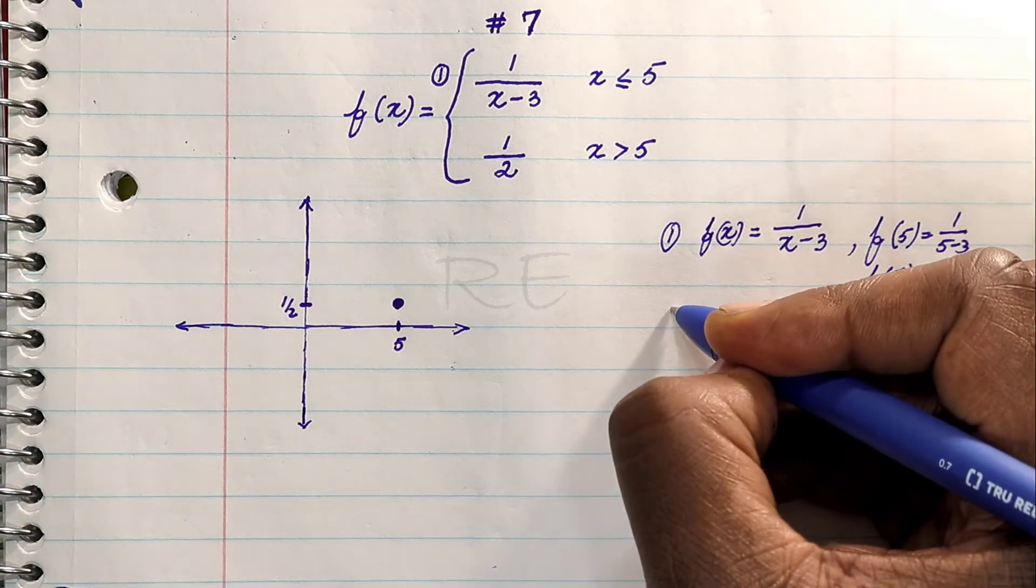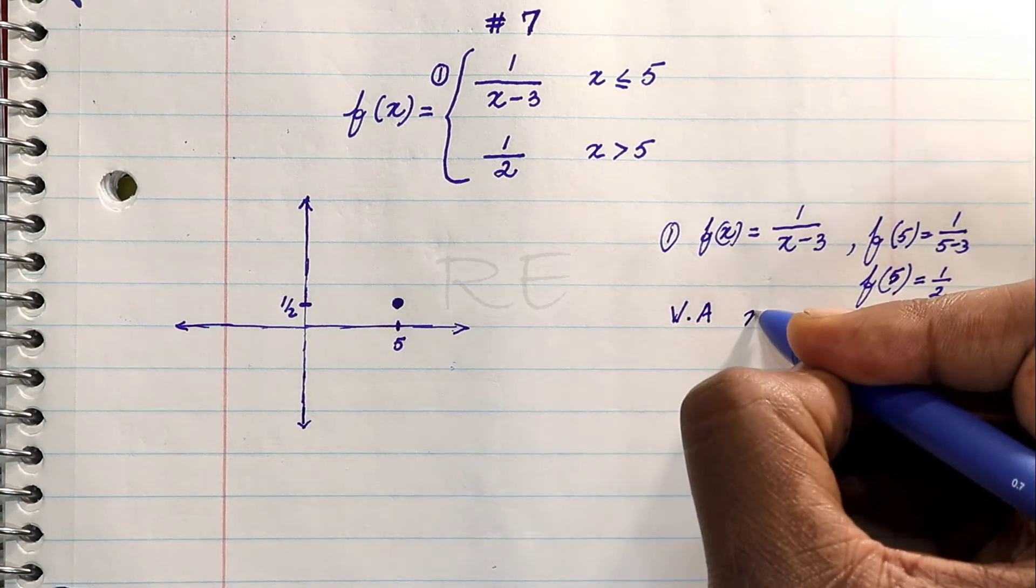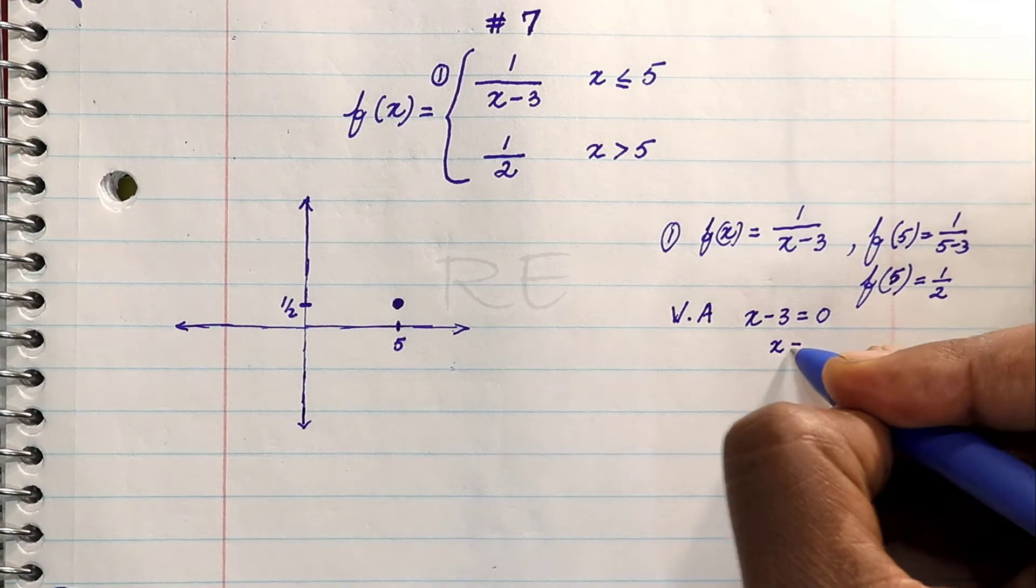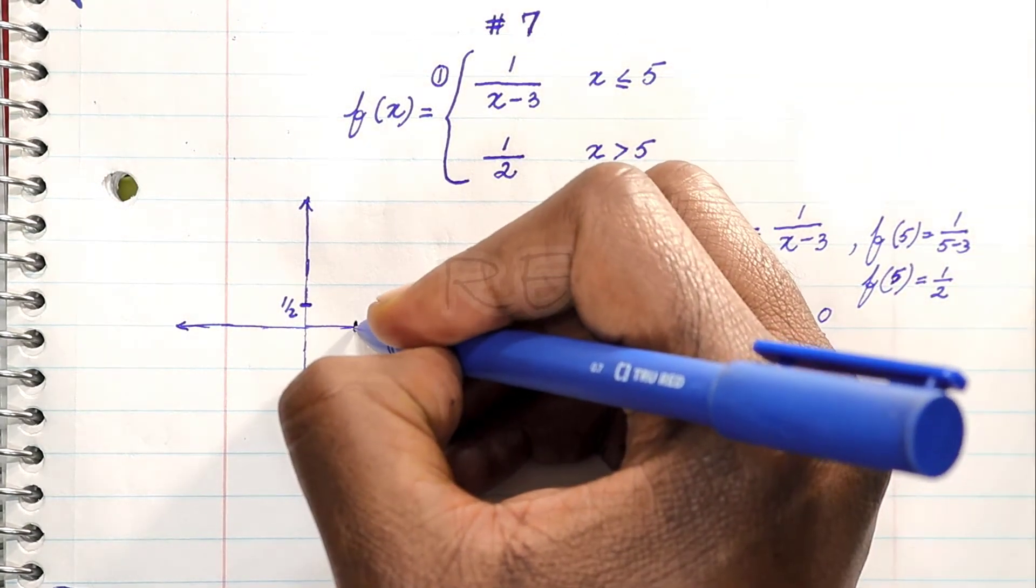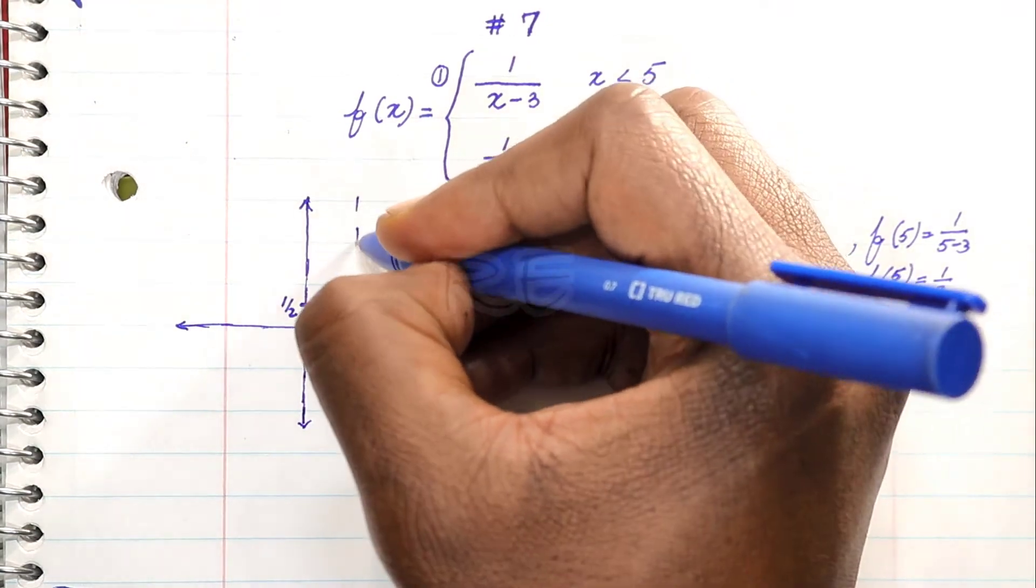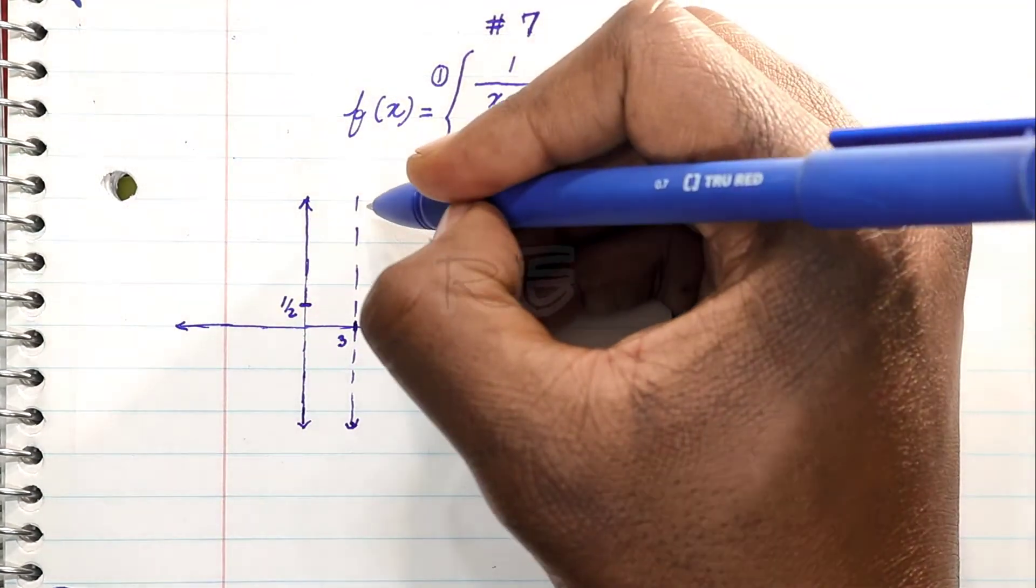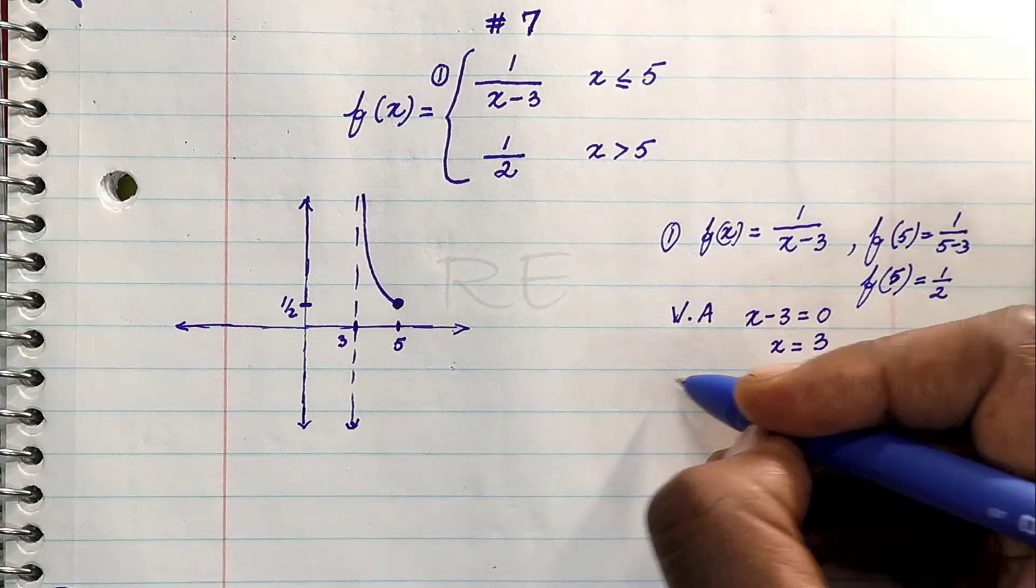Now we're going to look for the vertical asymptote. Set the denominator equal to 0 and x is equal to 3. So 3 is the vertical asymptote. The graph will get closer to the right of 3 until it gets to 5.